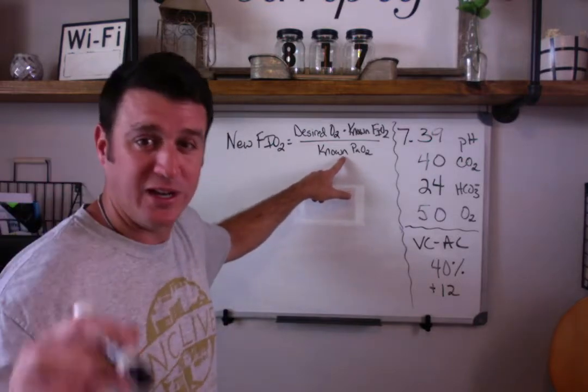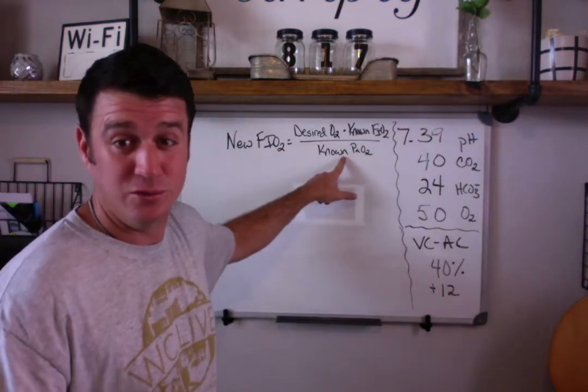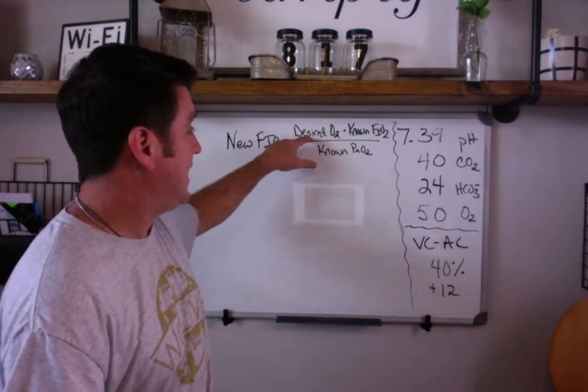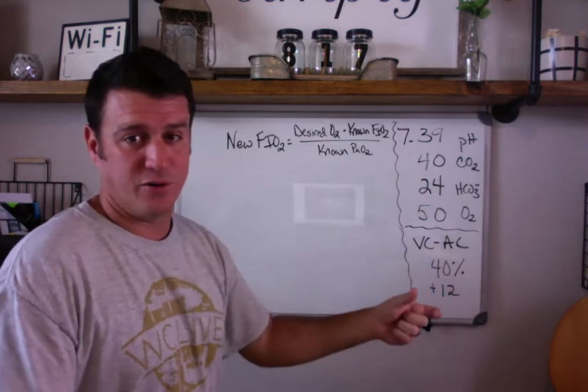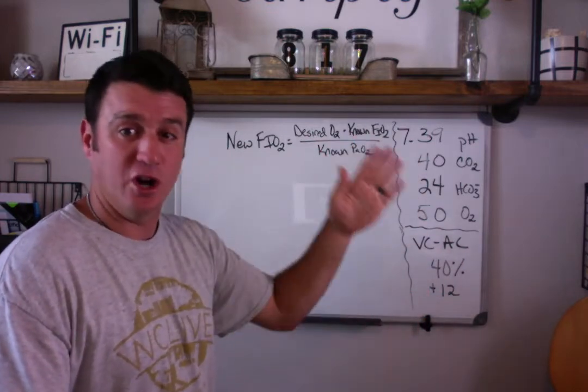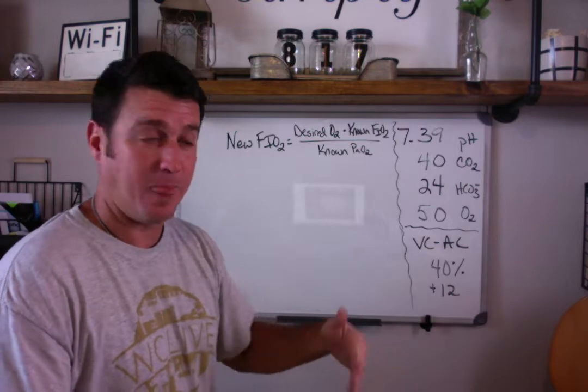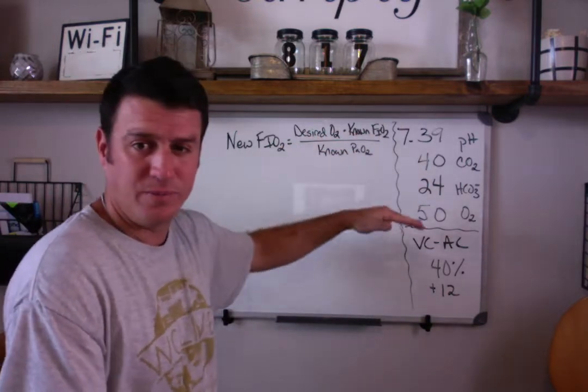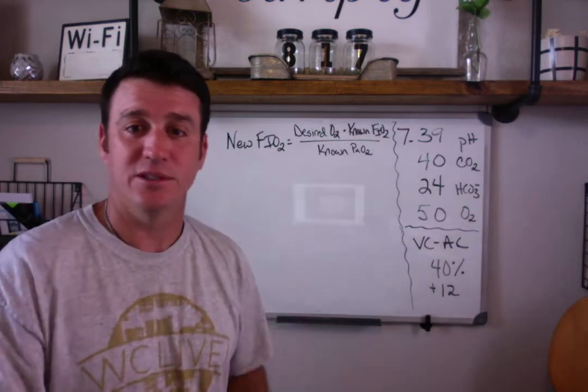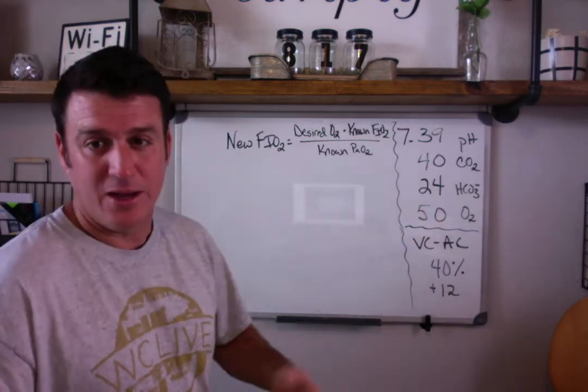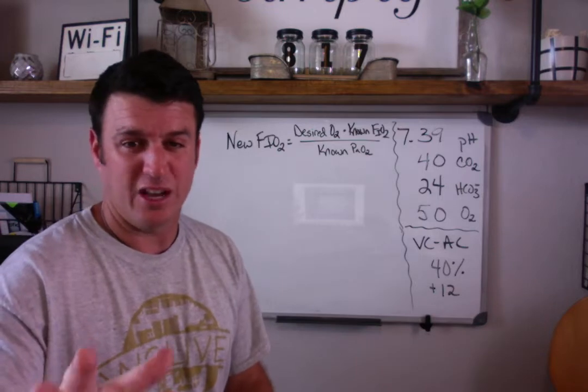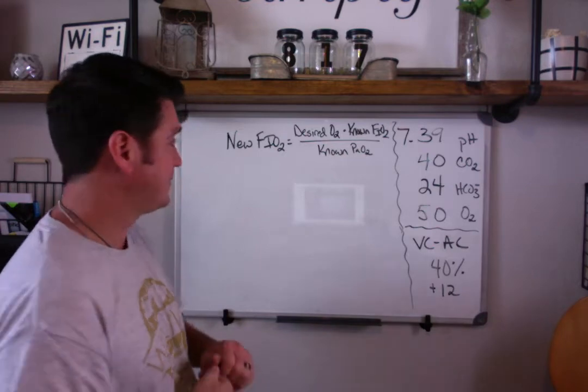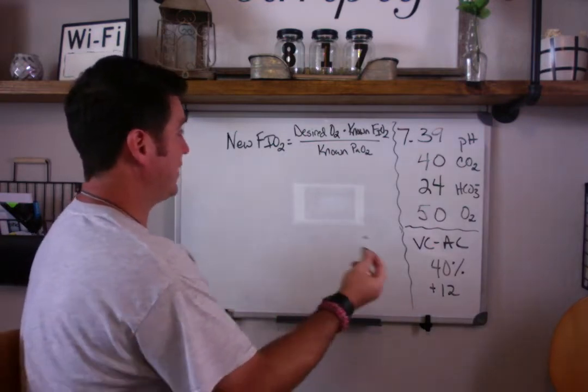What's frustrating to me about this, and this is why I don't even use this formula, is that the desired on the ventilation formulas was on the bottom. So it was known times known divided by desired. Well here it's desired times known divided by known, which screws everything up. Let me show you another way to do this. We'll work this problem first, and then I'm going to show you what I consider to be a shortcut.